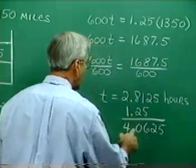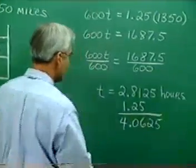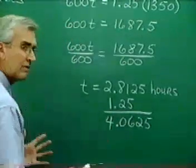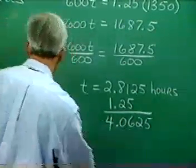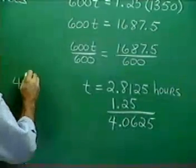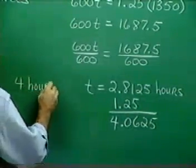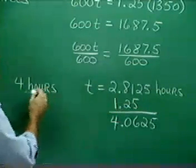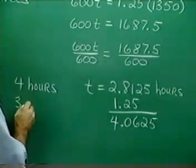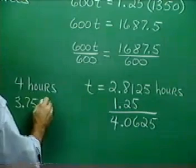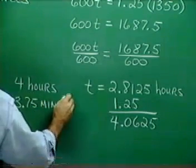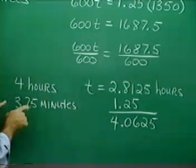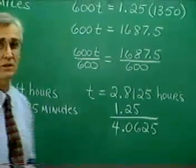We have 4.0625. So that's our total amount of time in hours. Does this make sense? Well, usually we don't think of time like this. We think more like 4 hours and some number of minutes. Well, it turns out that 0.0625 is 3.75 minutes. So the total amount of time for the trip is 4 hours and 3.75 minutes.